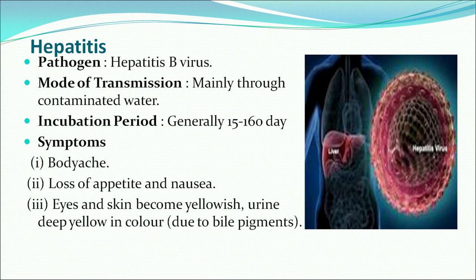The next disease is hepatitis. Its pathogen is Hepatitis B virus. Mode of transmission mainly occurs through contaminated water and its incubation period is very long, varying from 15 to 160 days. Symptoms include body ache, loss of appetite and nausea, eyes and skin becoming yellowish, urine deep yellow in color, and an enlarged liver. Prevention includes vaccination, proper hygiene, and taking simple food during the illness.